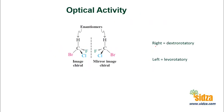This molecule will bend the light in the right direction or in the left direction. If you look at it through the mirror, its mirror image will be like this, and these two compounds are non-superimposable, so they are enantiomers. This is an optically active compound and its mirror image is also an optically active compound. These enantiomers have everything the same — the only difference is that they interact with the plane polarized light differently. If this molecule is levorotatory, then its mirror image will be dextrorotatory — enantiomers have opposite optical activity.